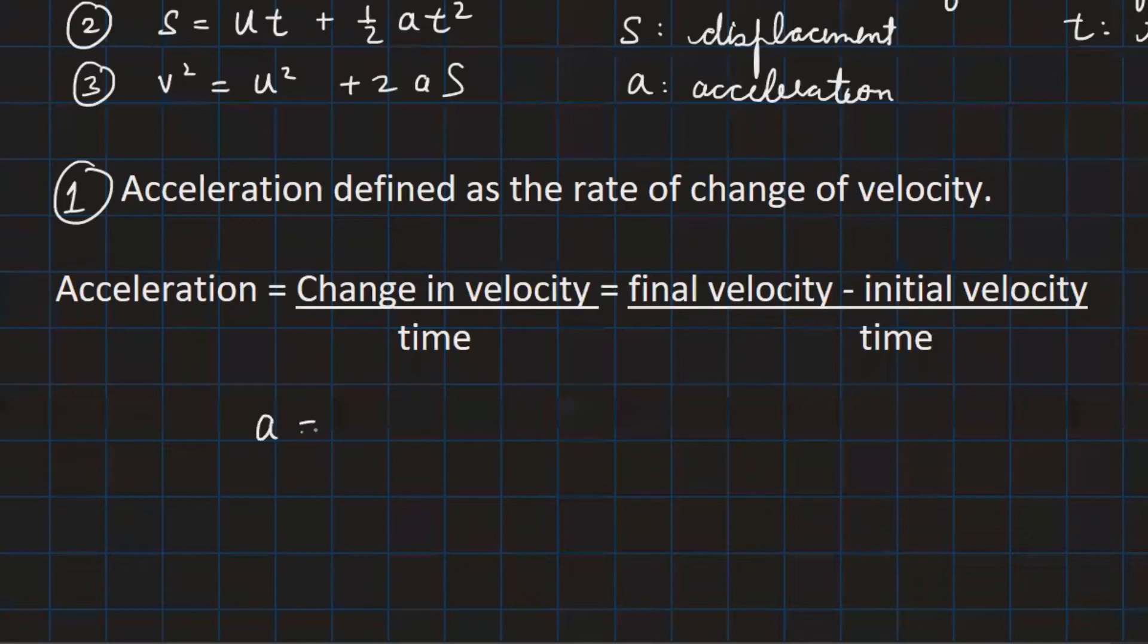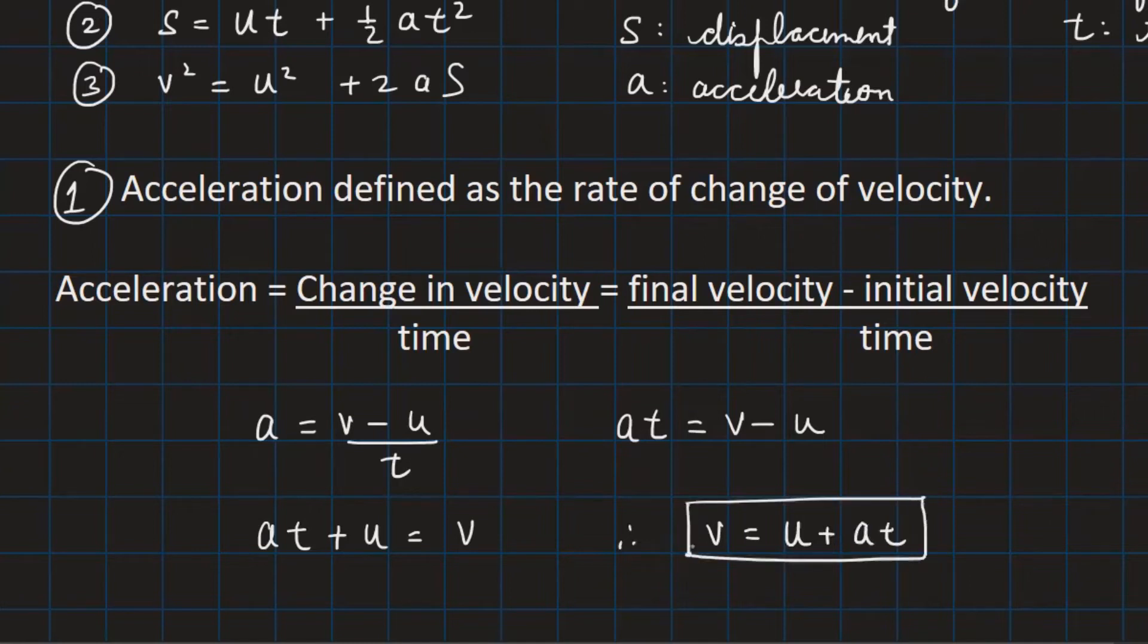So I will write this as a equals v minus u over t. I transfer that t on the other side. So I get at is v minus u. If I transfer that u on the other side, I'll get v. So therefore, v equals u plus at is the first equation. So this is how we get the first equation.